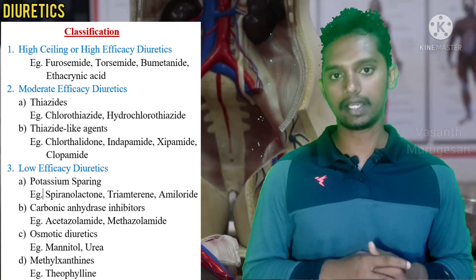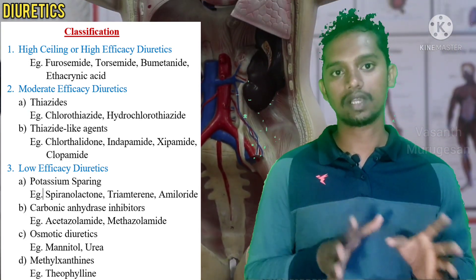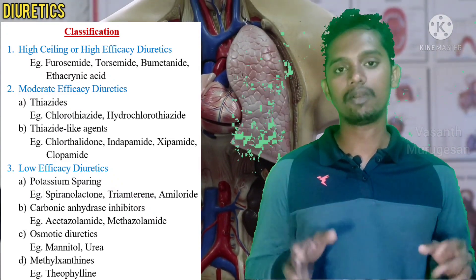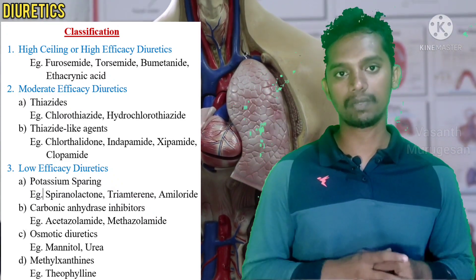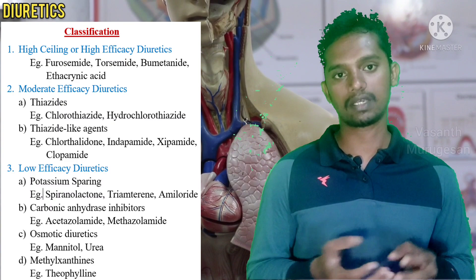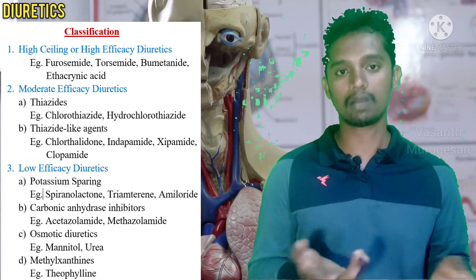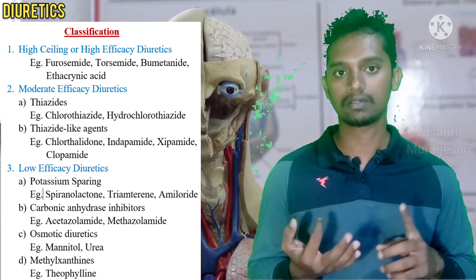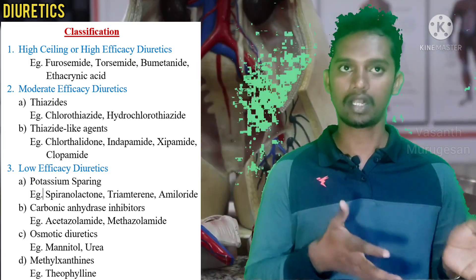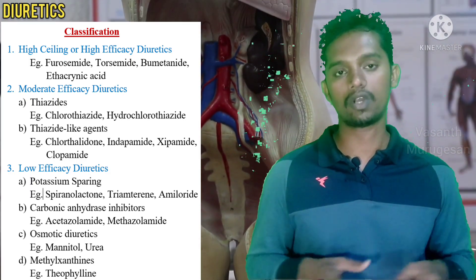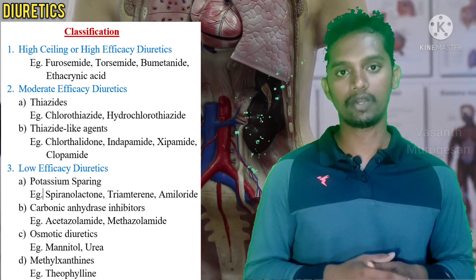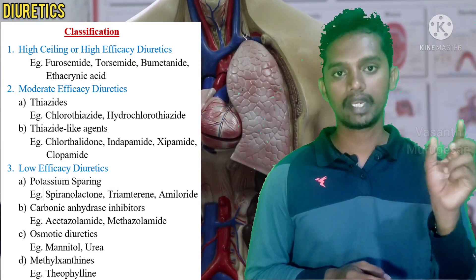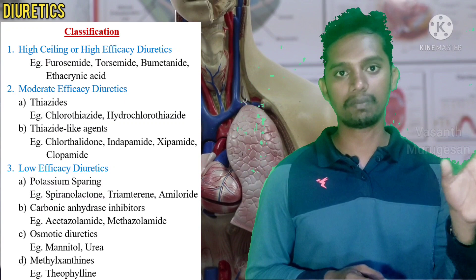The first major category, high ceiling diuretics, is also known as loop diuretics because it acts on the Henle's loop. There are no subtopics present. The most commonly used example drugs are furosemide, torsemide, and bumetanide. A basic mnemonic here is that furosemide and torsemide share the suffix '-semide', which is a mnemonic for high ceiling diuretics.